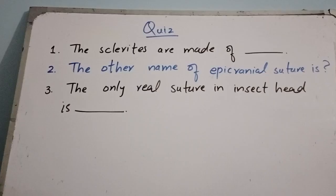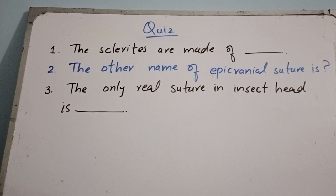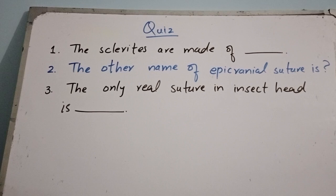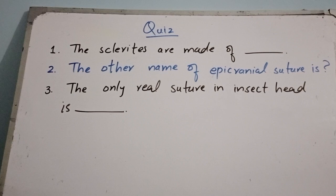Now I have a short quiz for you. Question one: the sclerites of the insect head are made up of? Question two: the other name of the epicranial suture is? Question three: the only real suture in the insect head is? Please write your answers in the comment box, don't forget to like the video, and thanks for watching.